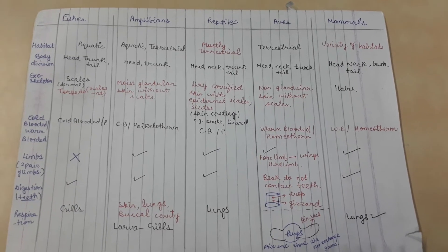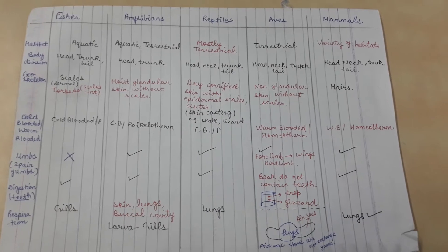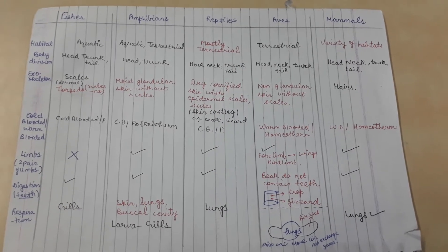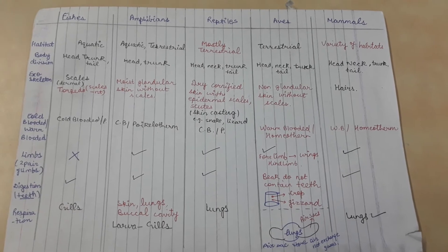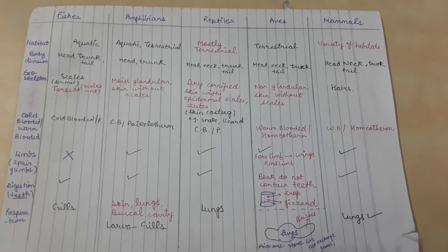Aves also have head, neck, trunk, and tail, same for mammals. Now about exoskeleton. Fishes have scales. Torpedo is an example of fishes which doesn't have scales, so it's mentioned in red. Amphibians have a moist glandular skin without scales.